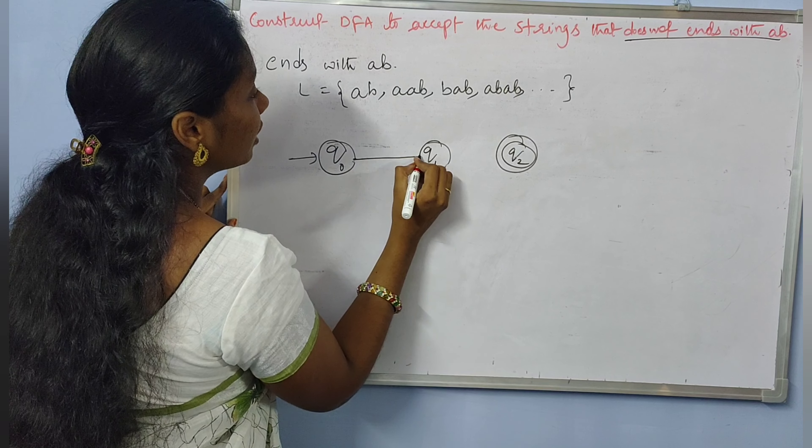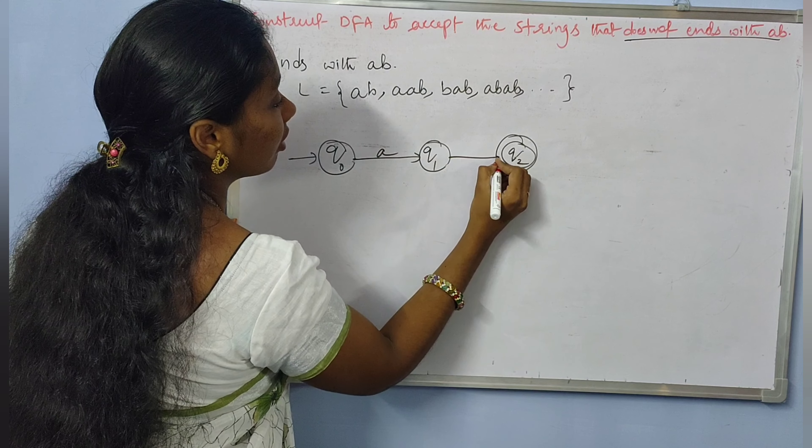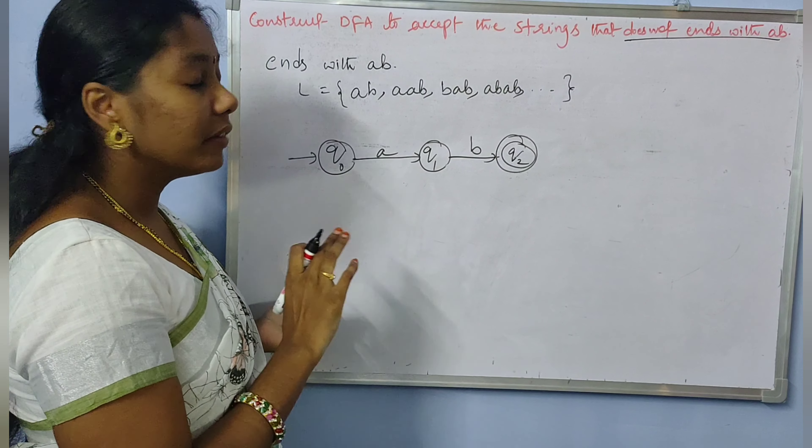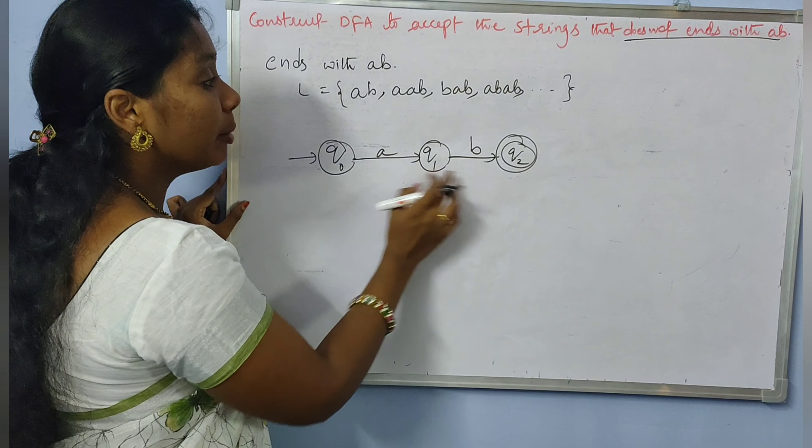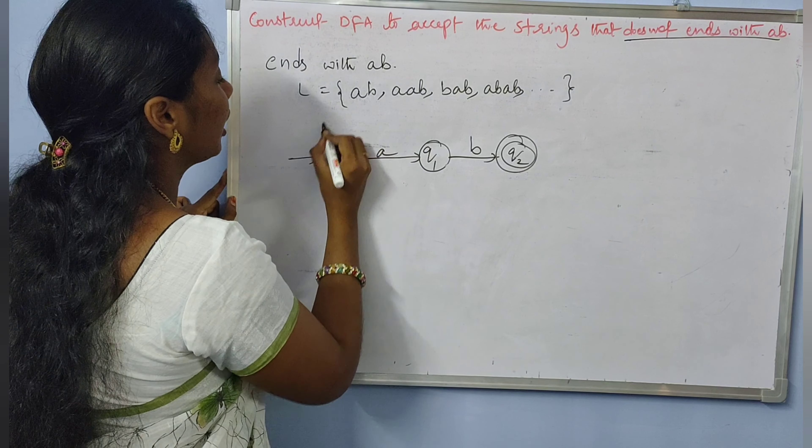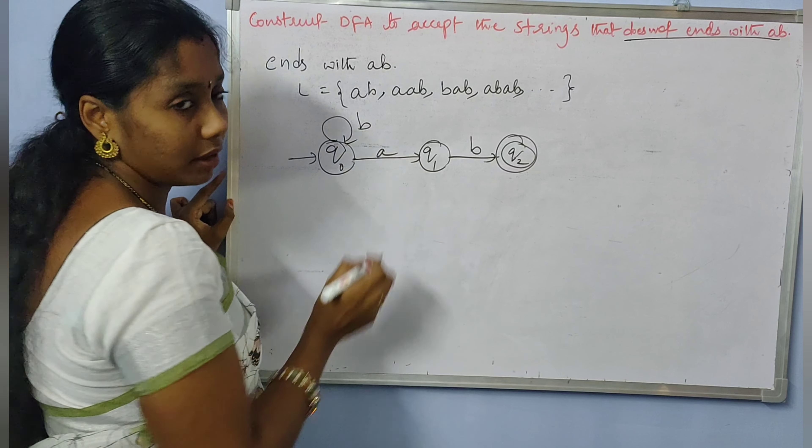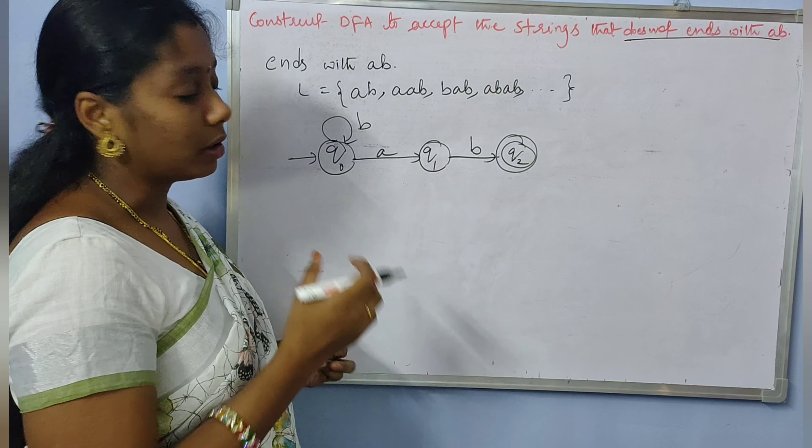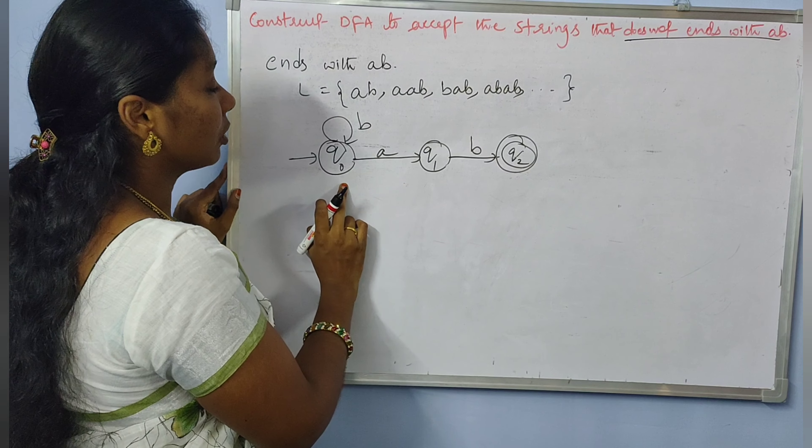It should end with AB. For strings ending with AB, at the start there's no restriction, we can have as many B's as we can. So Q0 has a self-loop B.